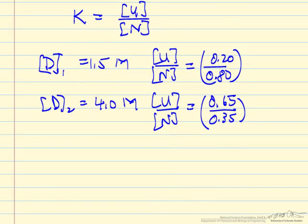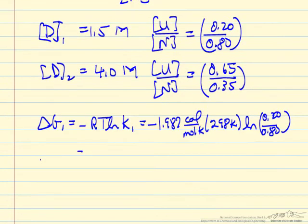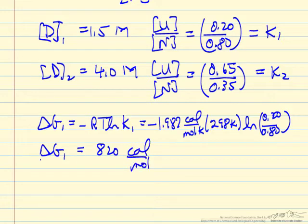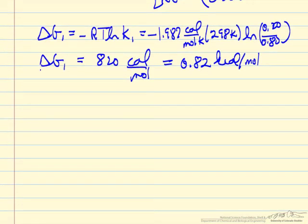So we're going to substitute these numbers into our equilibrium expression. So I've started the substitution here, this is K1 and this is K2. Our relation between Gibbs free energy change for unfolding, gas constant, absolute temperature, log of the equilibrium constant, put in the units, and this ratio, 0.2 over 0.8. So delta G1 is 820 calories per mole, or 0.82 kilocalories per mole.